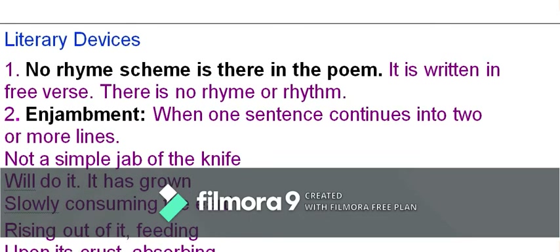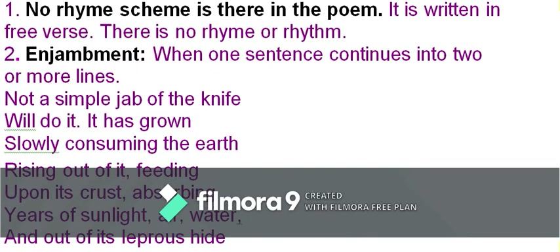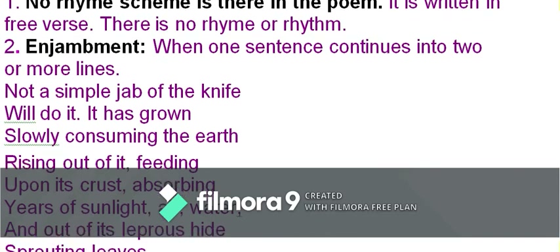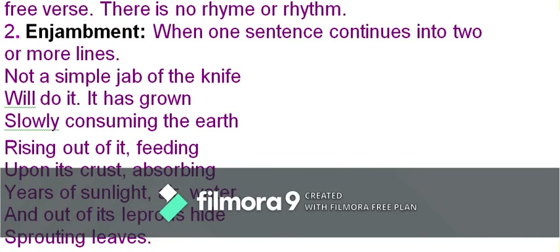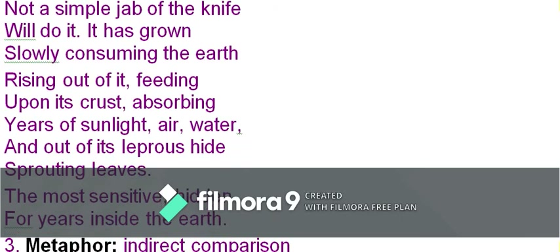Regarding literary devices: there is no rhyme scheme — it is a blank verse or free verse. Enjambment occurs when a verse continues without a comma at the end and the idea continues until we reach punctuation, so the sentence runs from one verse to the next across the entire stanza until a full stop.